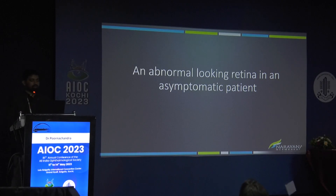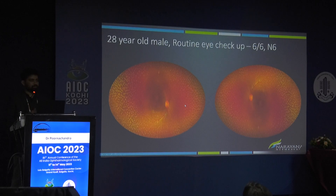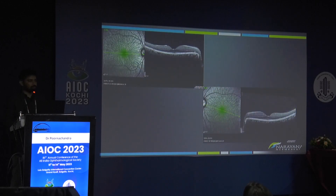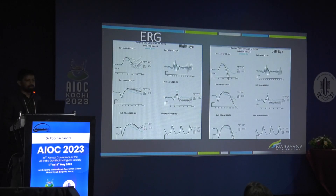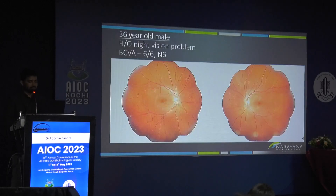Next, a case where the retina looks abnormal but the patient is asymptomatic. A 28-year-old male came for routine checkup with 6/6 vision. The fundus showed multiple fleck-like changes throughout, sparing the macula. OCT was normal. Full field ERG was also normal. This is benign fleck retina — a non-progressive disorder. The patient should be informed and followed up, as these patients usually do well.